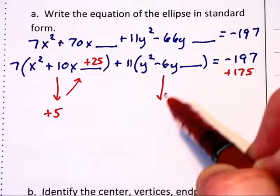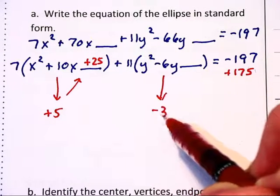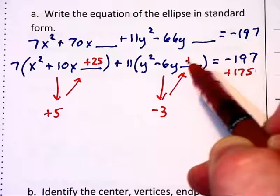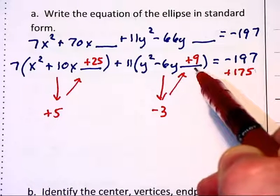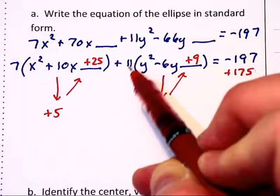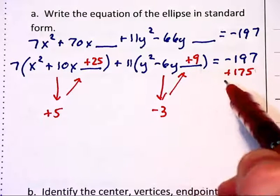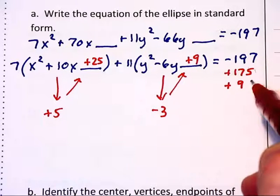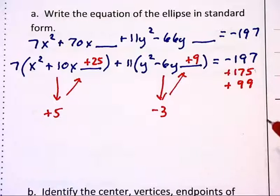Likewise, we're going to cut the negative 6 in half to a negative 3 and square that to a 9. But it's not really a 9. It's a 9 times the 11 outside the parentheses. That's really a 99 we added to the left. So we need to add 99 to the right hand side also.